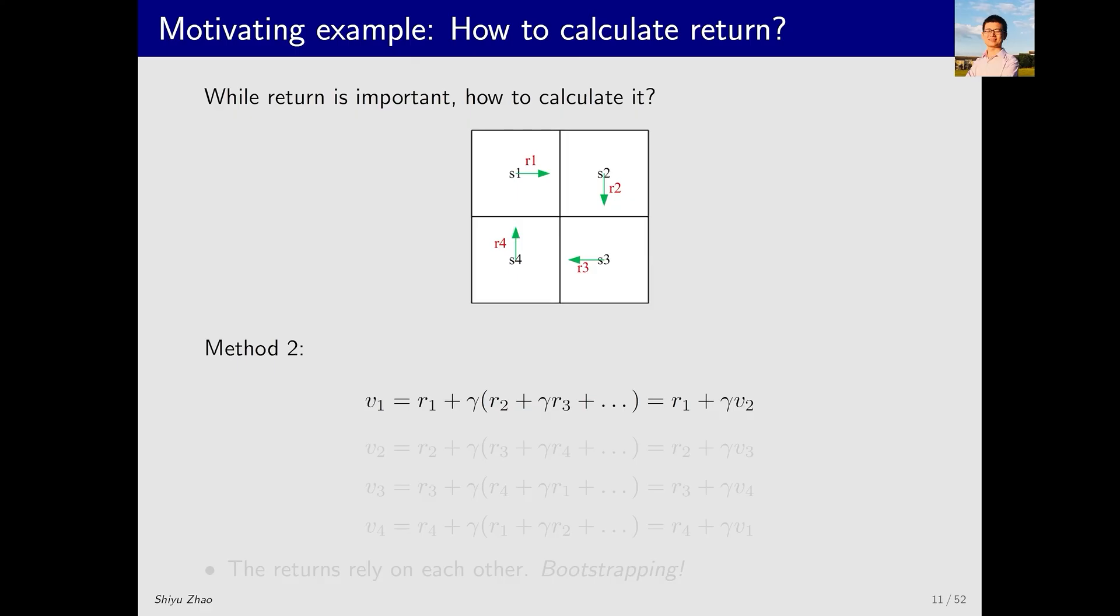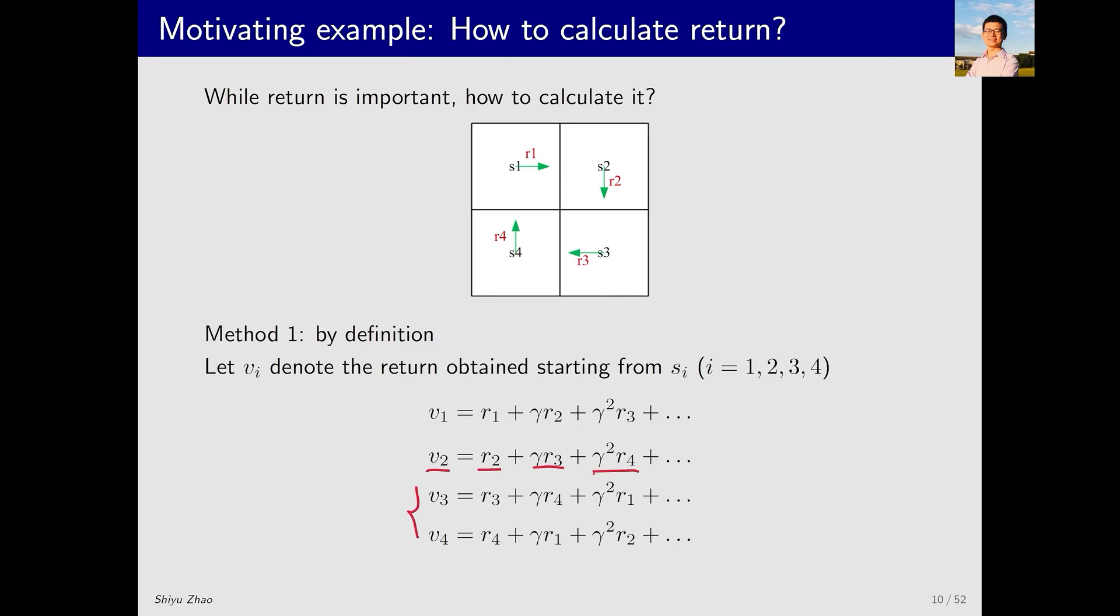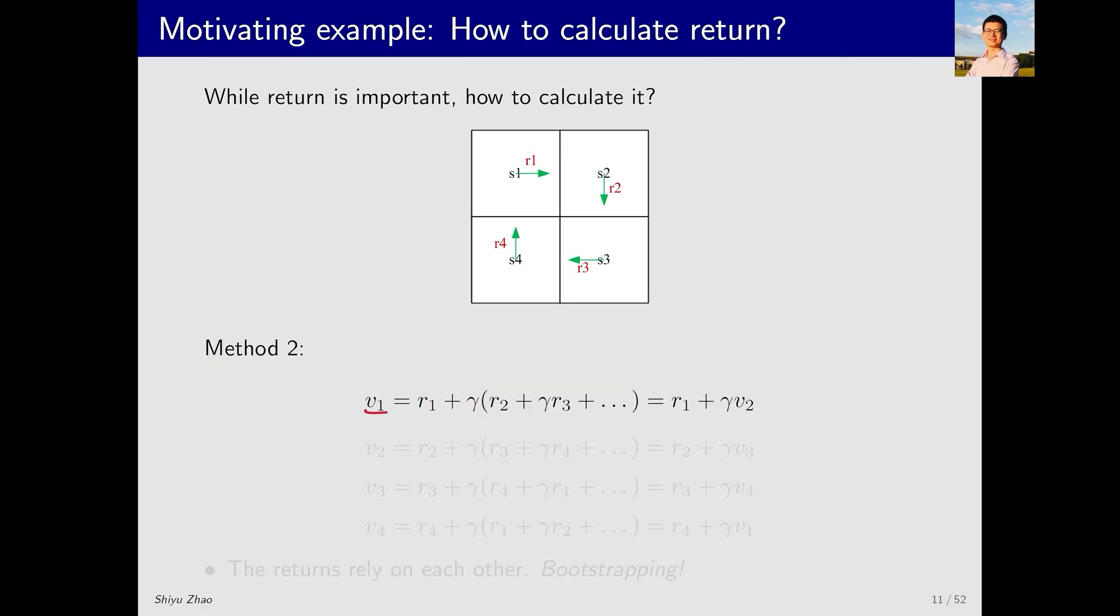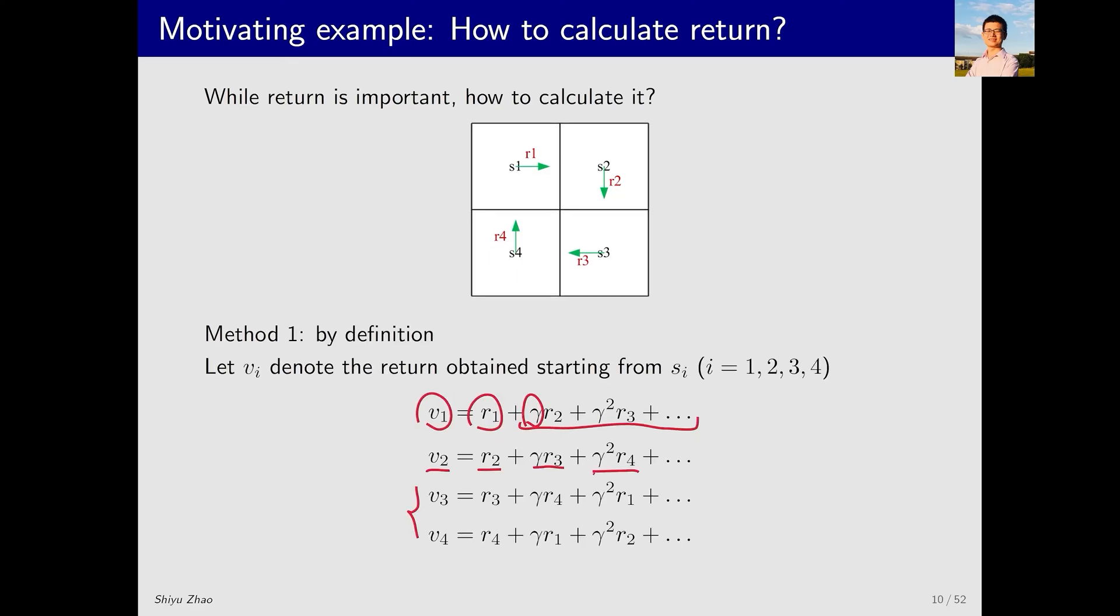Now, let's introduce the second method, which is very simple and interesting. Looking back at V1, what is it equal to? It equals R1 plus a series of subsequent rewards. We can factor gamma out of this series, so V1 equals R1 plus gamma, times what follows inside the brackets. What's inside the brackets? It's R2 plus gamma R3, which, if we remember, equals V2.